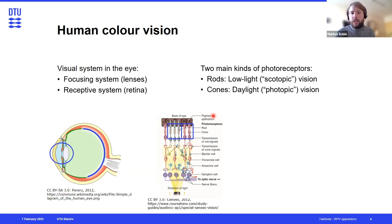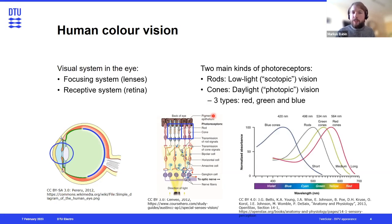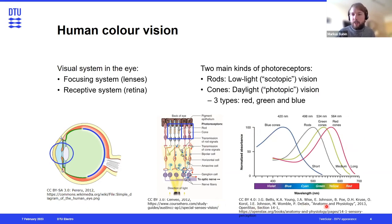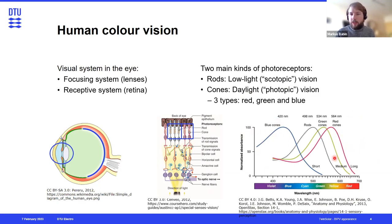The cones give us daylight vision and color vision. There are in fact three types of cones: blue cones, green cones, and red cones. In this graph you can see their individual absorption spectra. The receptive areas of each cone type is shifted by wavelength, which explains why they can see blue, green, and red light.